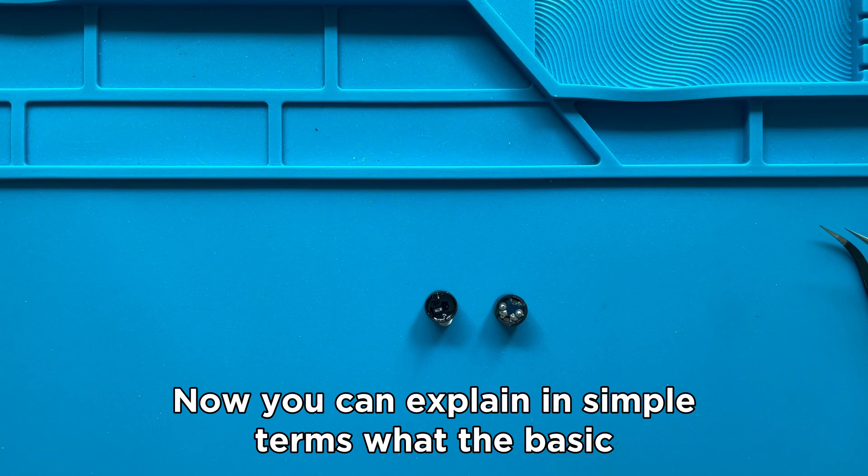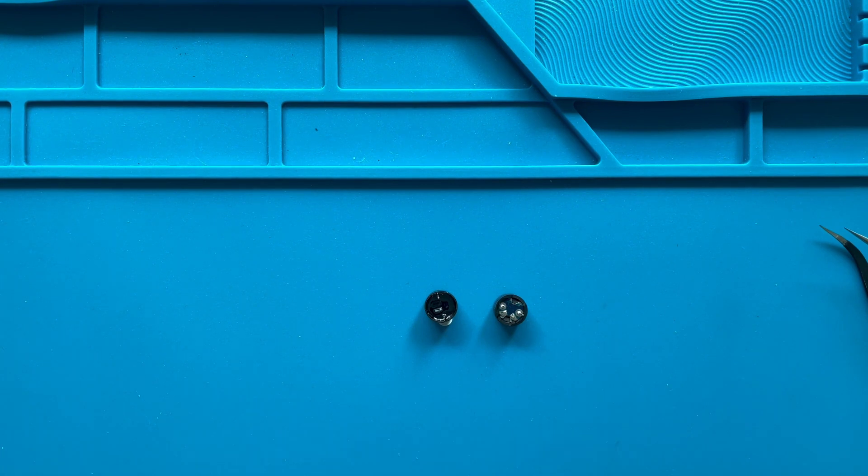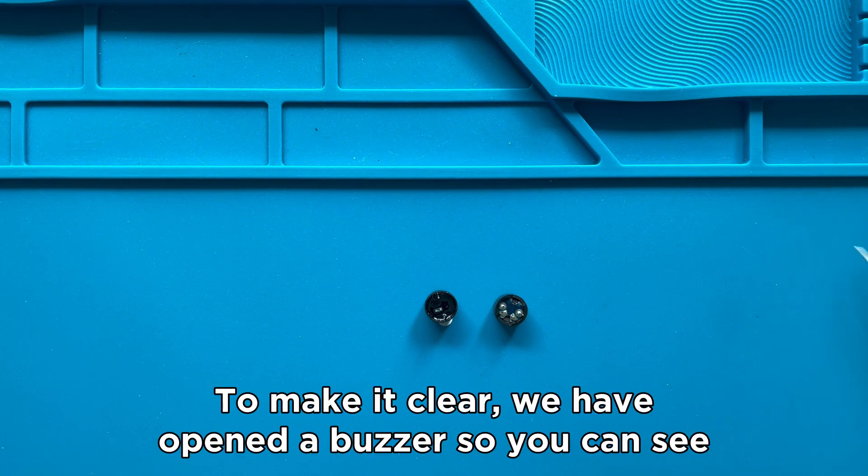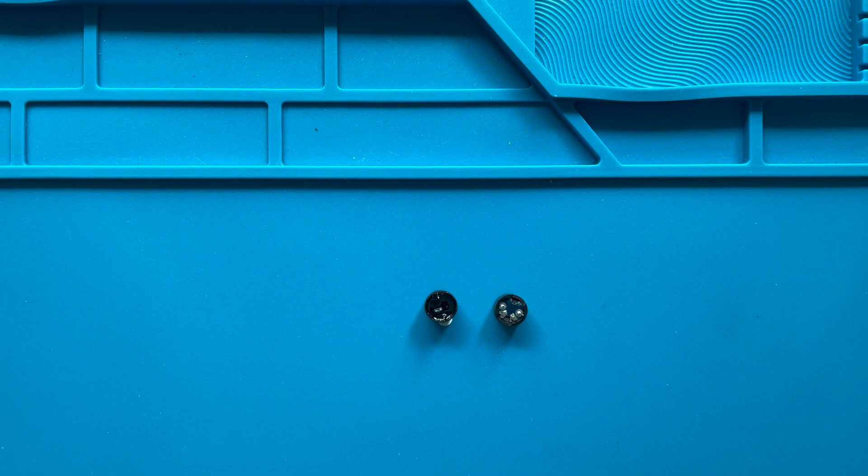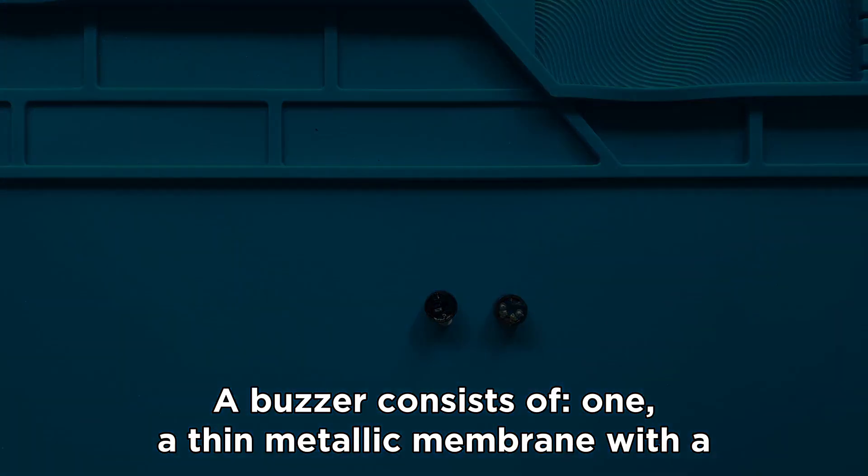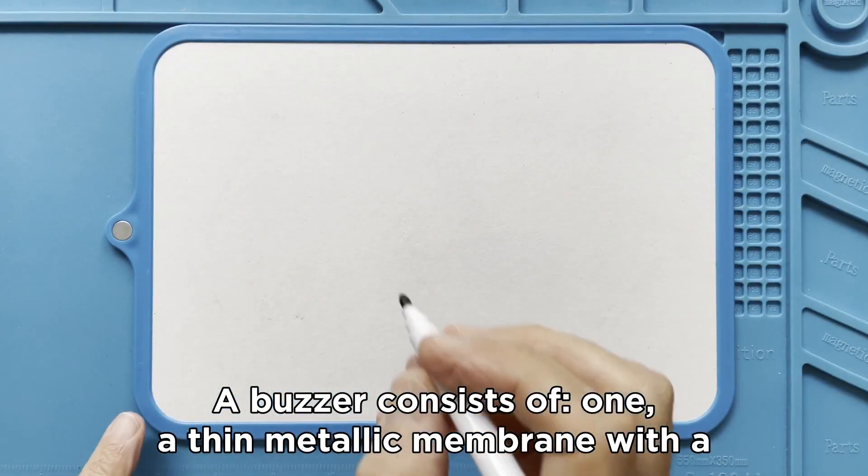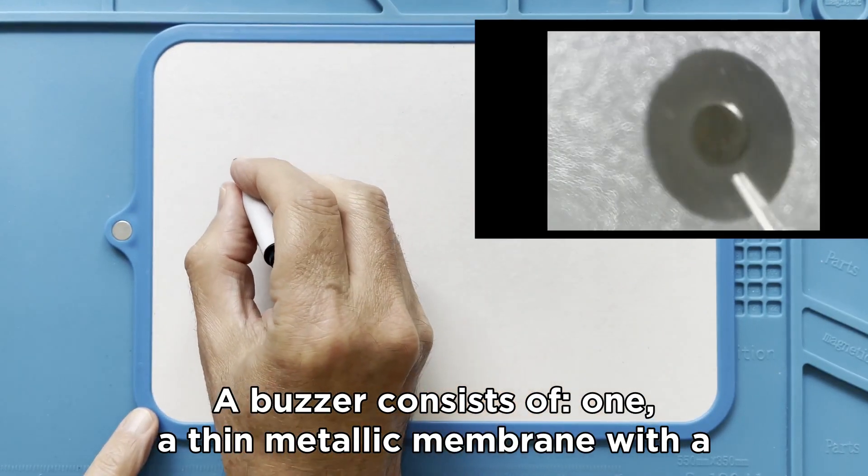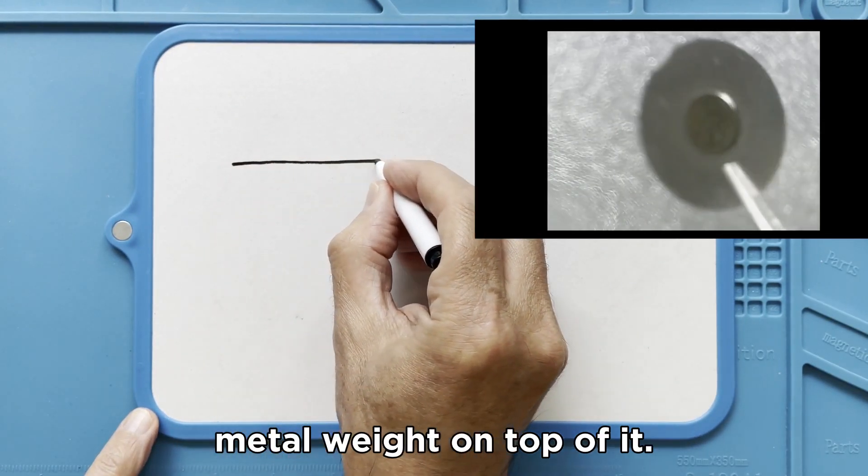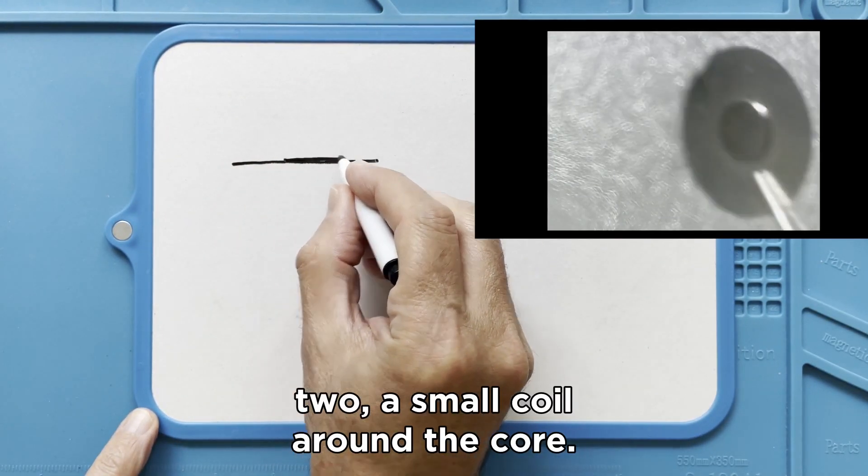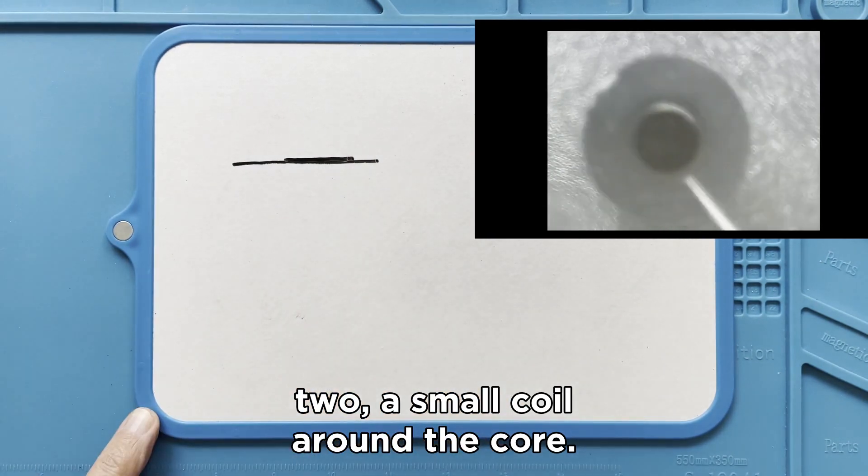Now you can explain in simple terms what the basic operating principles are. To make it clear, we have opened a buzzer so you can see what is inside. A buzzer consists of a thin metallic membrane with a metal weight on top of it and a small coil around the core.